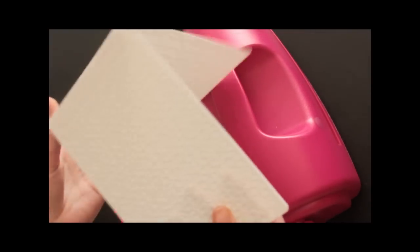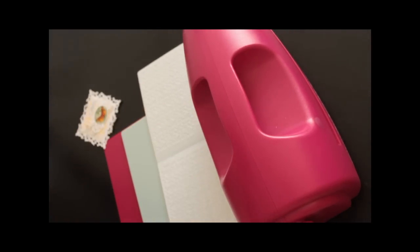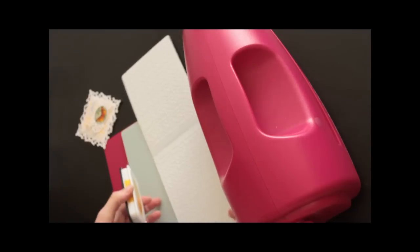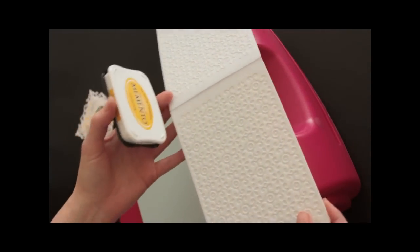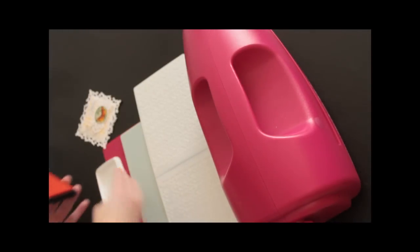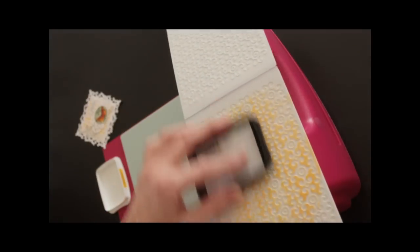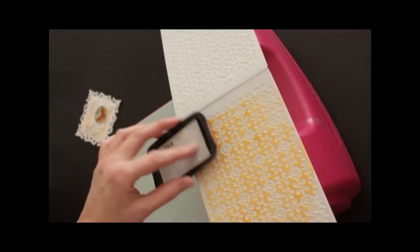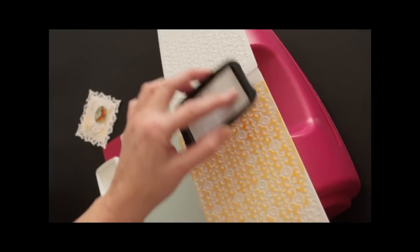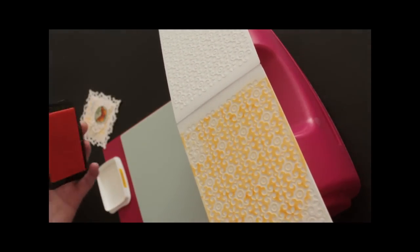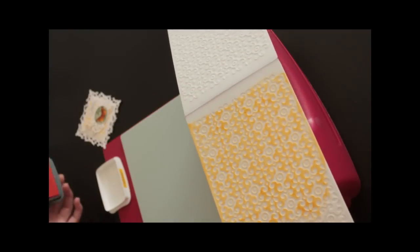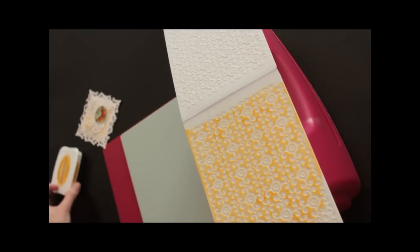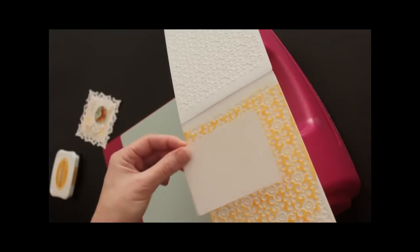For the faux letterpress, you will need to add some ink to your folder. You can either use a brayer or just rub your ink pad directly over the folder. Don't worry about cleaning. If you're using dye ink, you can just run water over it or use a baby wipe or a wet paper towel to clean it. Then you add your paper in there.